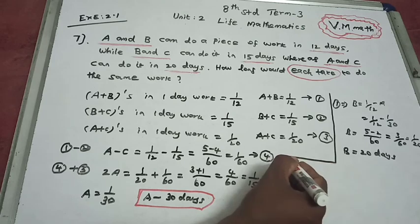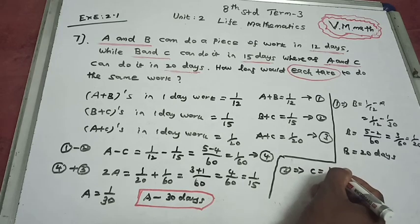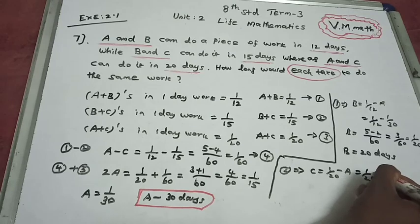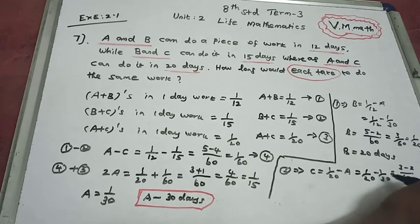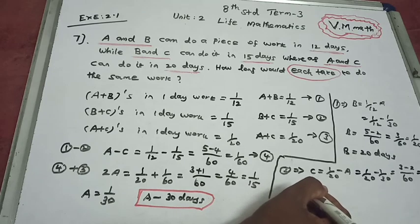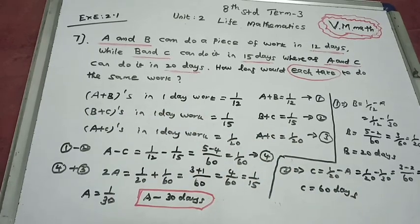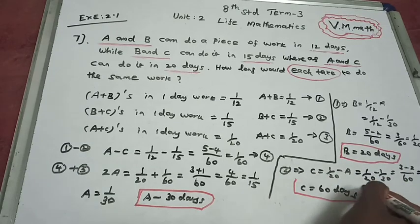Next, find C. From equation 3: C equals 1/20 minus A, which is 1/20 minus 1/30. That gives 1 divided by 60. So C equals 60 days. Final answers: A completes in 30 days, B in 20 days, C in 60 days.